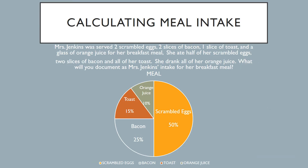Now we're going to take a look at another question. This question is in the same context but has different content in the way that the meal is explained to you. The question says: Mrs. Jenkins was served two scrambled eggs, two slices of bacon, one slice of toast, and a glass of orange juice for her breakfast meal. She ate half of her scrambled eggs, two slices of bacon, and all of her toast, and she drank all of her orange juice. What will you document as Mrs. Jenkins' intake for her breakfast meal? Again, whether it was breakfast, lunch, or dinner — that's irrelevant. What is relevant is the amount of food she started out with and what percentage of that food item accounts for her entire meal.